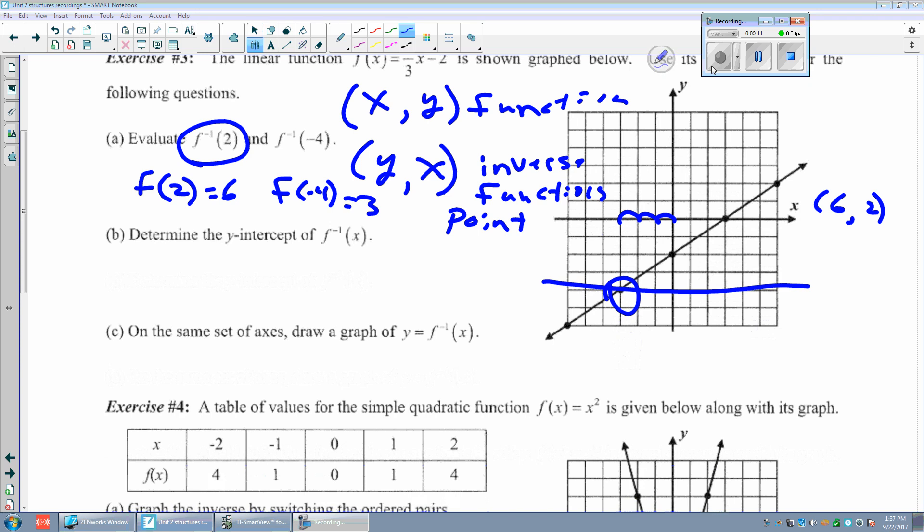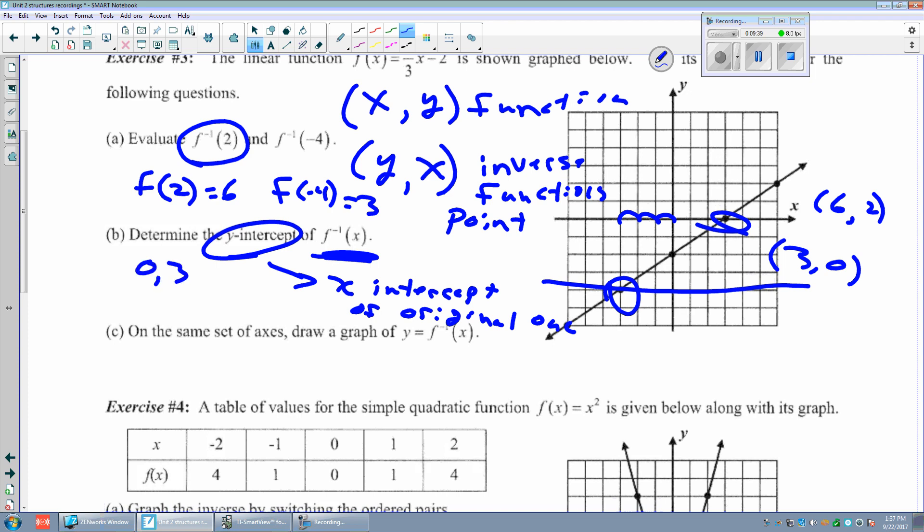Now if you want to determine what the y-intercept of the inverse function is, we're just going to look for the x-intercept of the original function. There's the x-intercept at (3, 0), so the y-intercept is (0, 3), or just 3 depending on what kind of question it is.